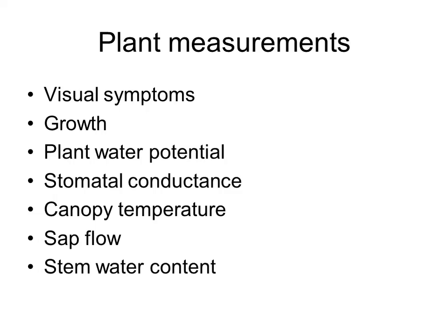We start with discussing the use of plant measurements for irrigation scheduling. We will be revising first the visual symptoms, measurements of growth, plant water potential, stomatal conductance, canopy temperature, sap flow, or stem water content.